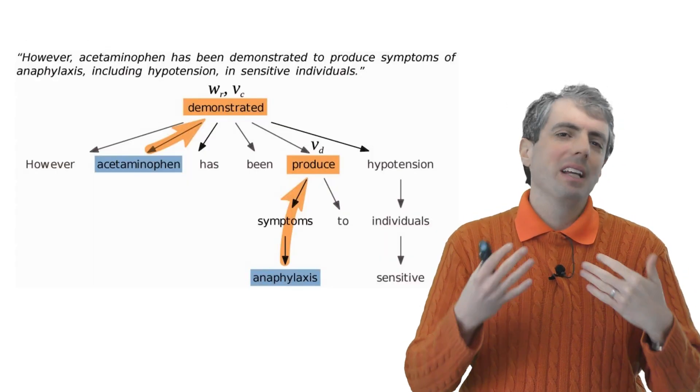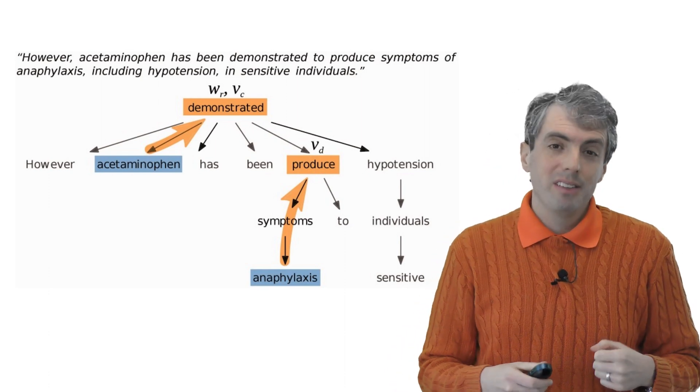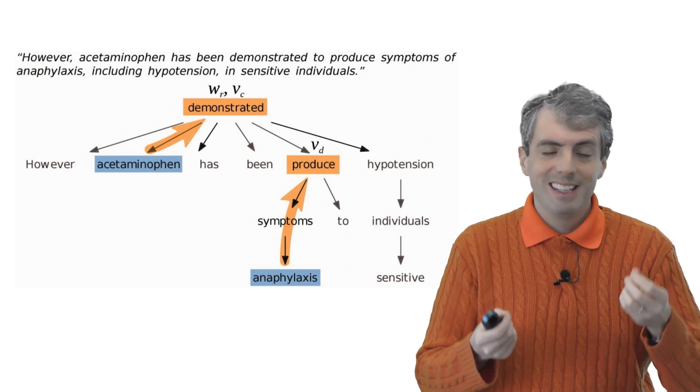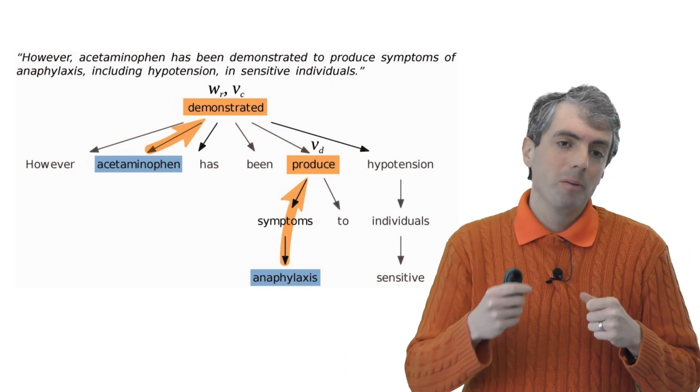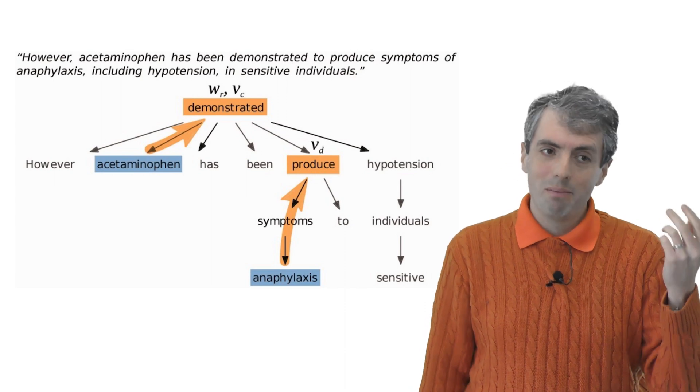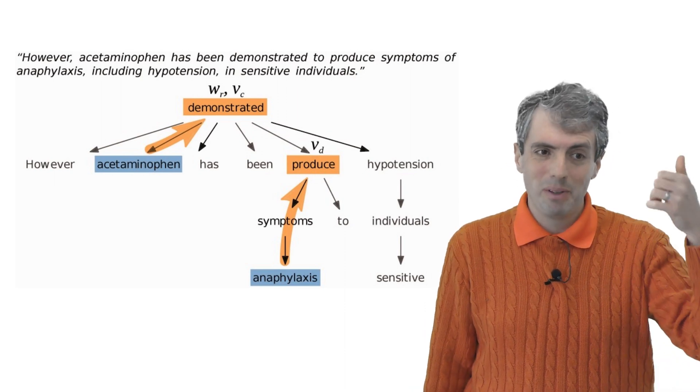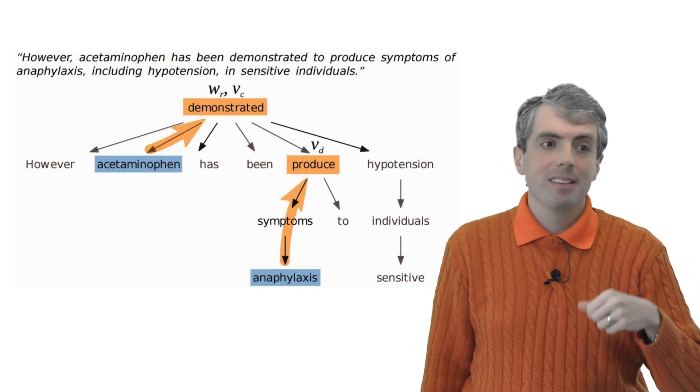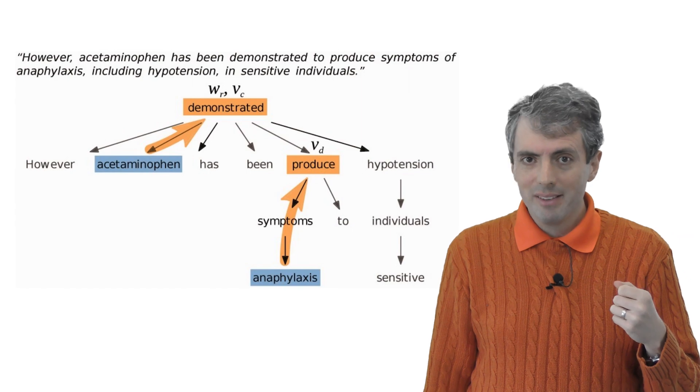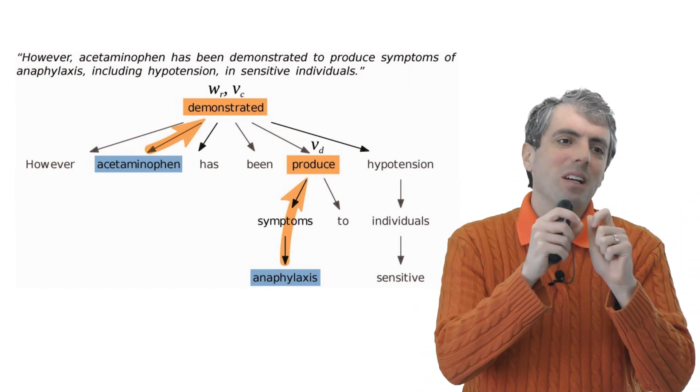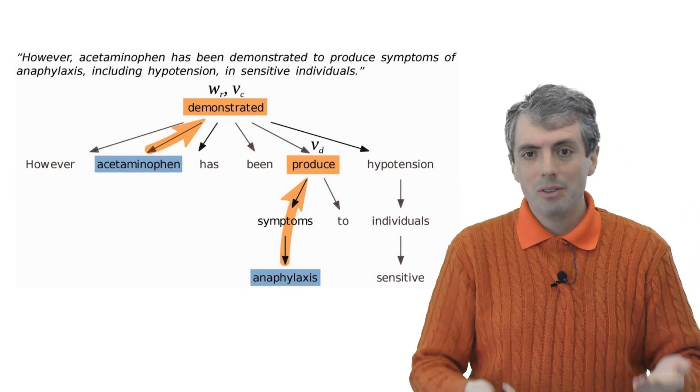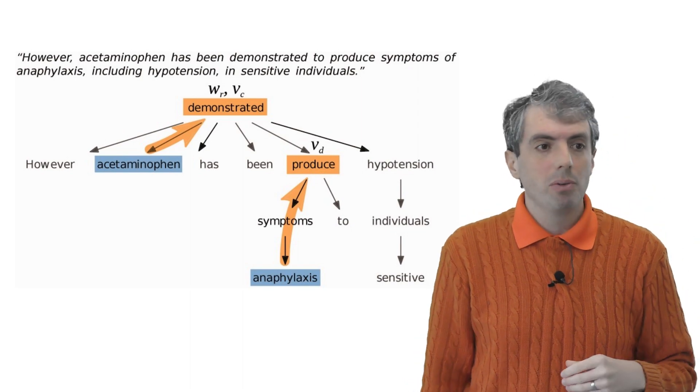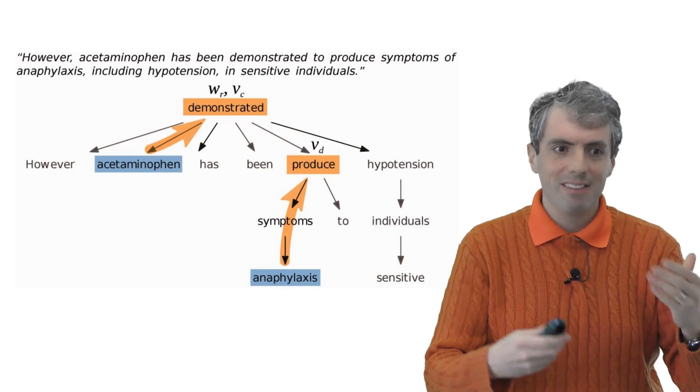While most of these approaches are now neural, more traditional approaches often use parse trees to find the relationship between two entities. So you have two entities in blue here. So this is looking at the relationship between a drug and some condition. You go through a dependency parse that gets you from one entity to the other, create a feature vector encoding that dependency parse path, and then you use that to feed into a classifier saying what kind of relationship, if any, is there between acetaminophen and anaphylaxis.